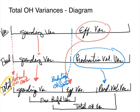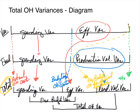The third peg in our total overhead diagram is calculated by taking the third peg in variable plus the second peg in fixed. This gives us our flexible budget overhead for actual outputs. Then the last peg in the total diagram is calculated by taking the third peg of variable plus the third peg of fixed, and this is called standard overhead allocated to production.